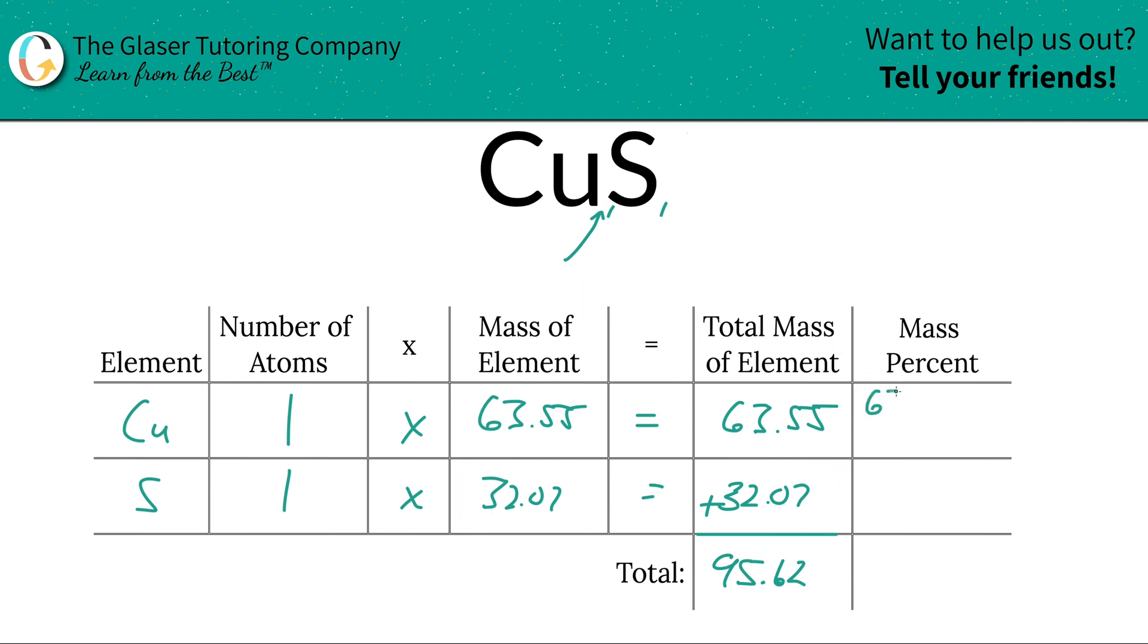So we're going to take the 63.55 divided by 95.62, multiply that by 100. And then we simply find a percent here of about 66.46 percent. That's the percent here for copper.